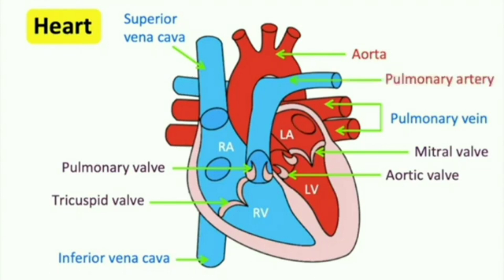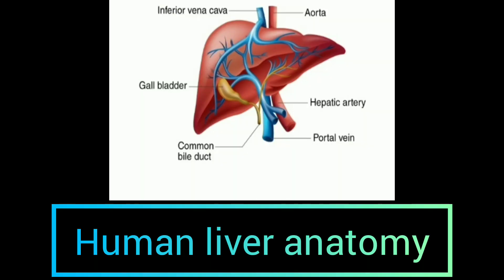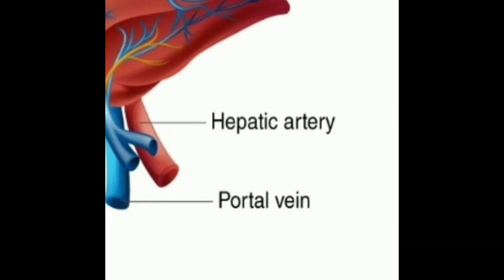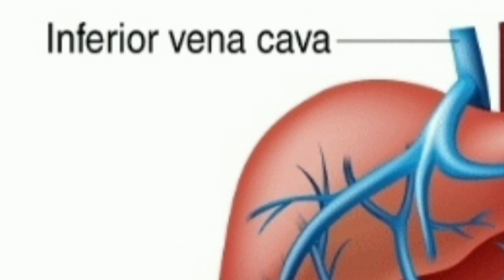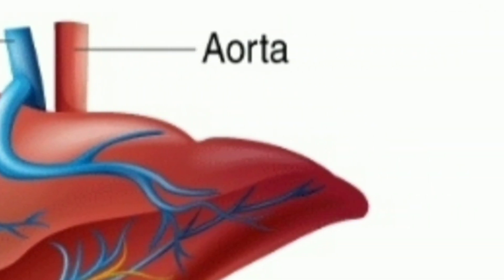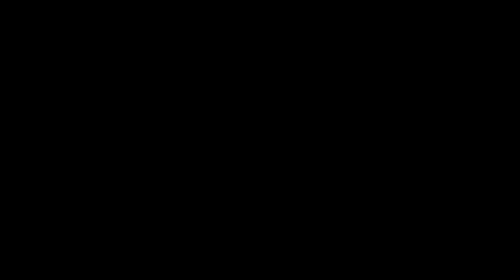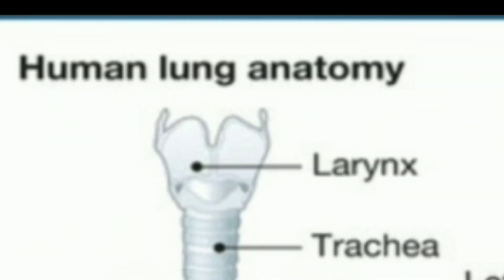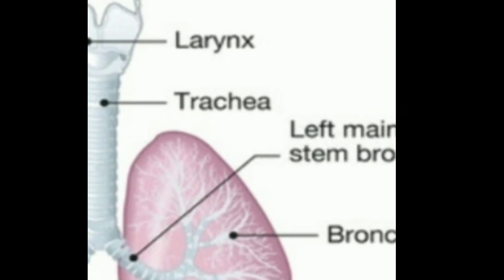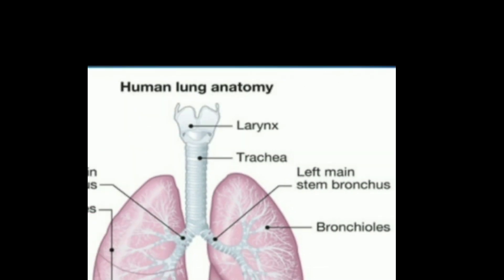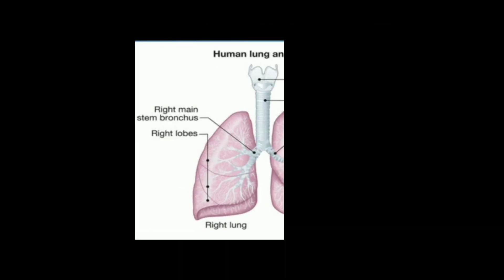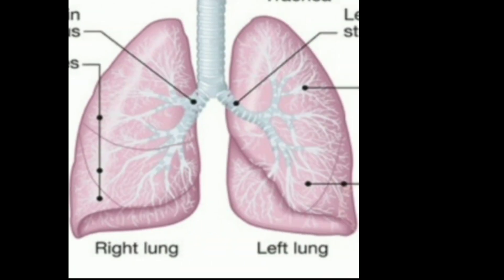The pulmonary artery carries oxygenated blood from the heart to the lungs. Human liver: common bile duct, hepatic artery, portal vein, inferior vena cava, aorta, gallbladder. Larynx, trachea, left main stem bronchus, right main stem bronchus, right lobes, left lobes, right lung, left lung, bronchioles.